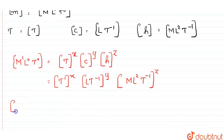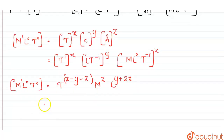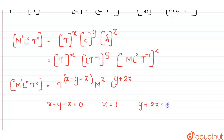Comparing exponents on both sides: for M, z = 1. For L, y + 2z = 0.